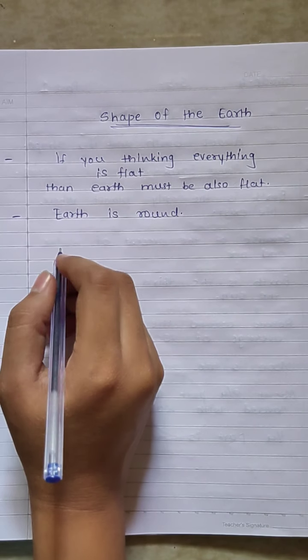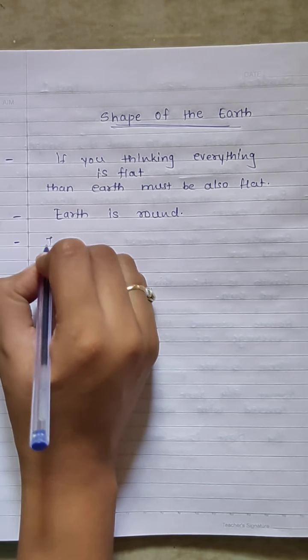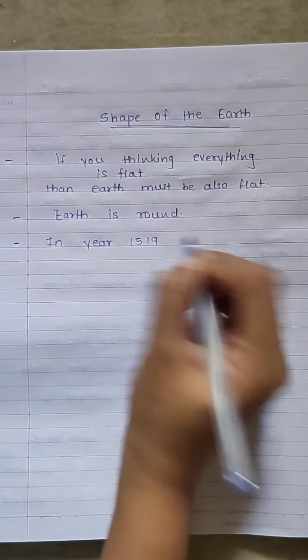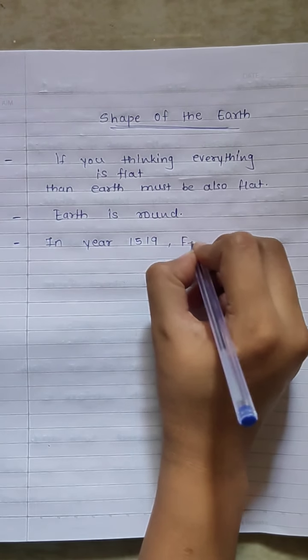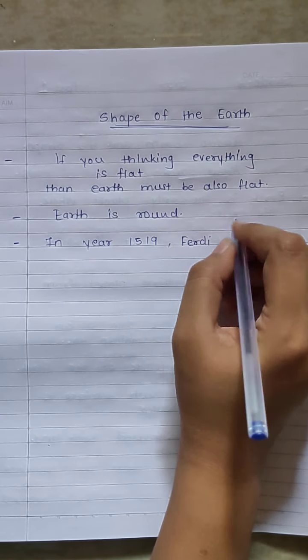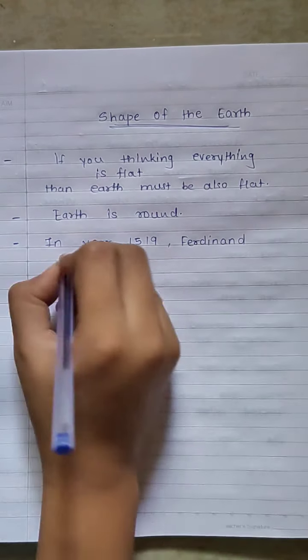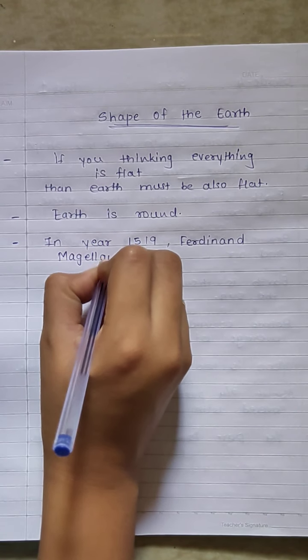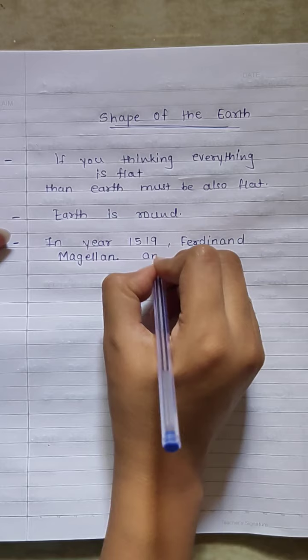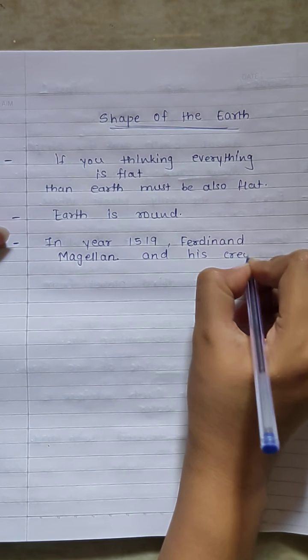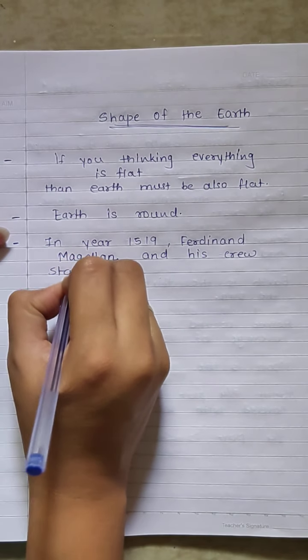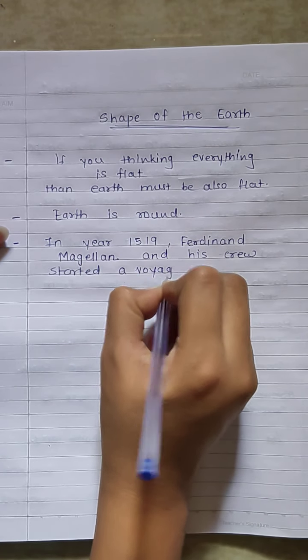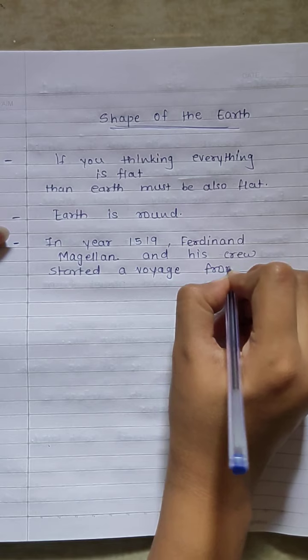How they prove that the earth is round? Now, in year 1519, Ferdinand Magellan and his crew started a voyage from Spain.